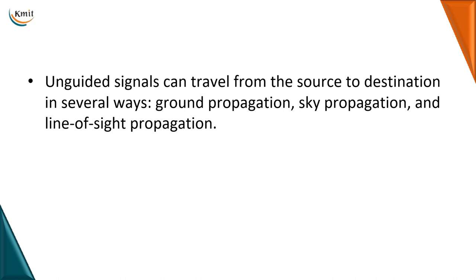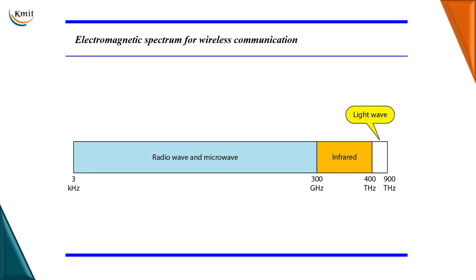Let me show you the electromagnetic spectrum for wireless communication. Waves whose frequency ranges from 3 kilohertz to 300 gigahertz are termed as radio waves and microwaves. Infrared waves range from 300 gigahertz to 400 terahertz, and beyond 400 terahertz up to 900 terahertz we have light waves.